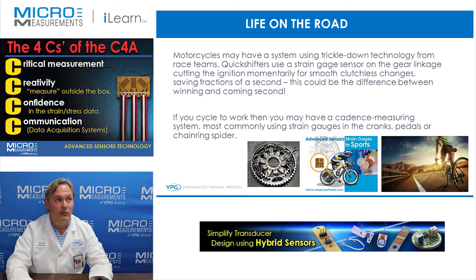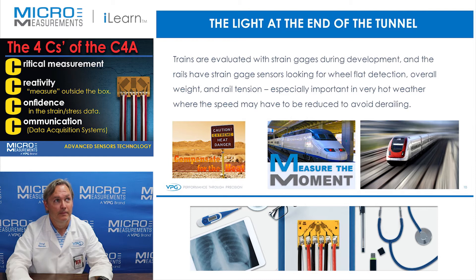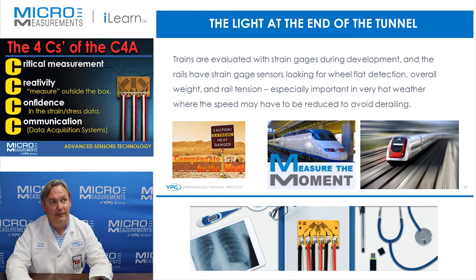If you cycle to work, you may have a cadence measuring system, most commonly using strain gauges in the cranks, the pedals, and the chain ring spider. Trains are evaluated with strain gauges during development, and the rails have strain gauge sensors looking for wheel flat detection, overall weight, and rail tension — especially important in very hot weather where speed may be reduced to avoid derailing.